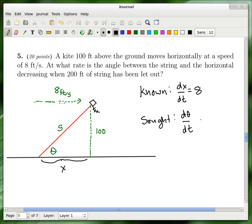So what does this one say? This one says a kite 100 feet above the ground moves horizontally at a speed of 8 feet per second. And you can see I've kind of tried to indicate that on my diagram with this dashed green line with 8 written above it. And here's the flying kite, of course.